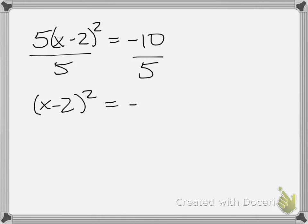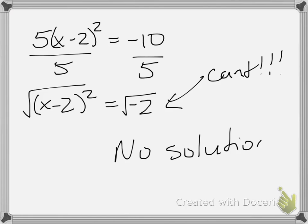What if we had 5 times x minus 2 squared is equal to negative 10, and we want to solve this? Well, we divide both sides by 5, and we get x minus 2 squared is equal to negative 2. And now we want to square root both sides, but we can't square root negative numbers, right? So that means this has no solution. It's okay to get no answer. That just means our parabola has no x-intercepts, and we've seen that before too.